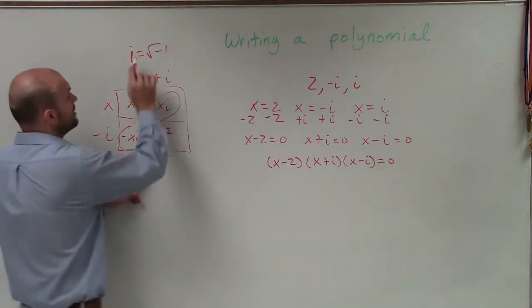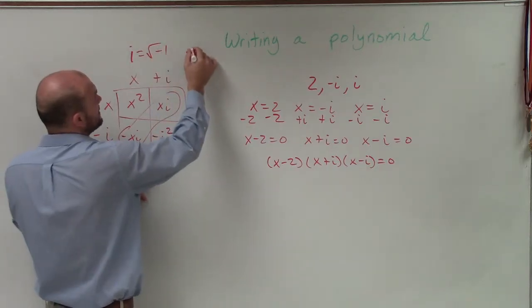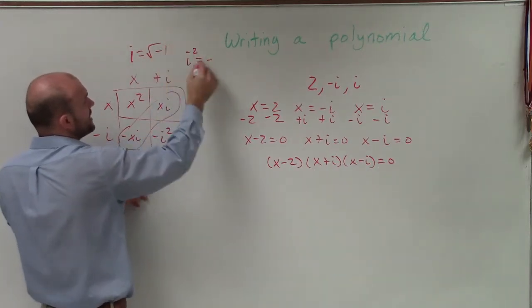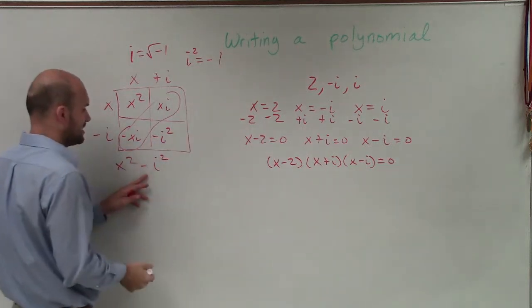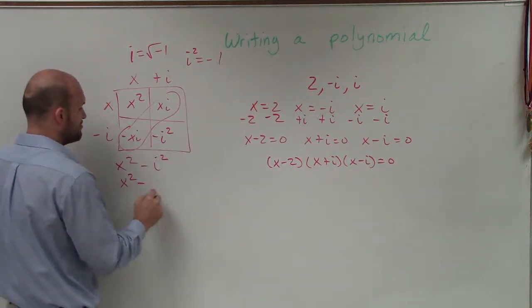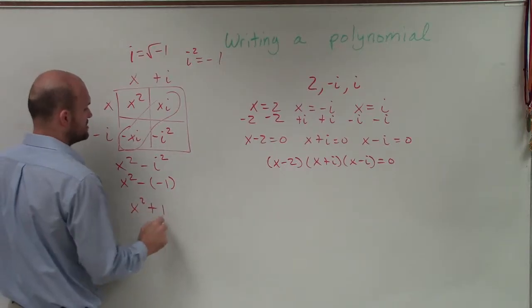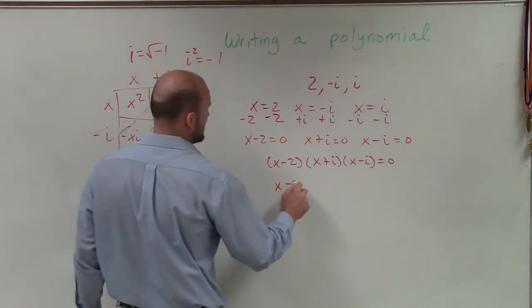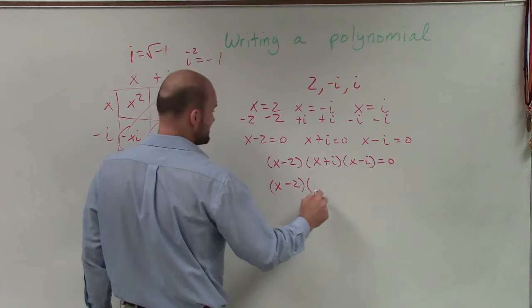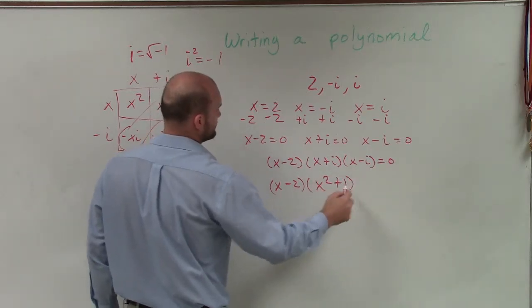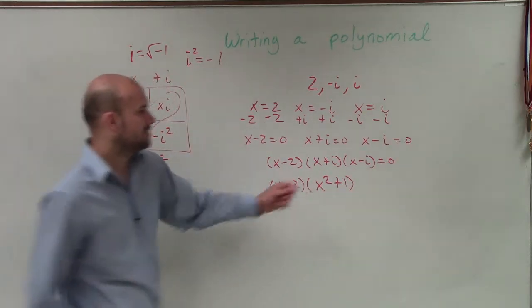But remember, if i equals the square root of negative 1, then i squared equals negative 1. So this is really x squared minus a negative 1, which is x squared plus 1. So now I have x minus 2 times x squared plus 1 equals 0.